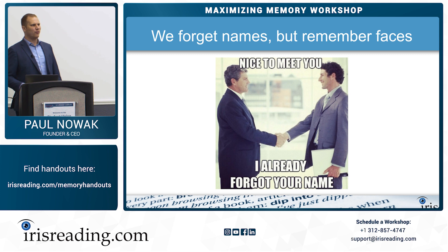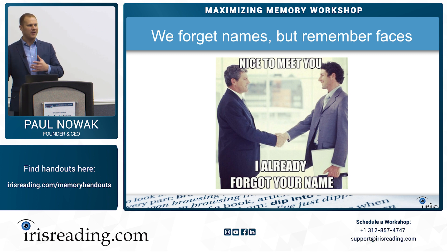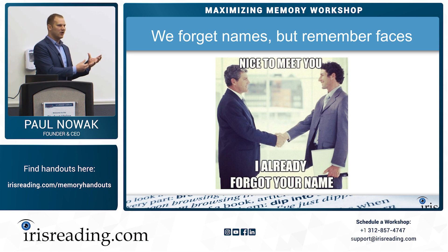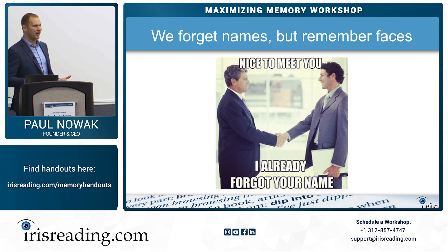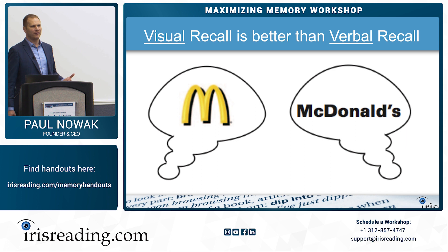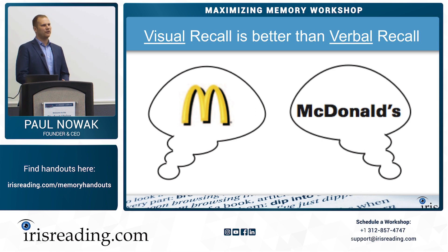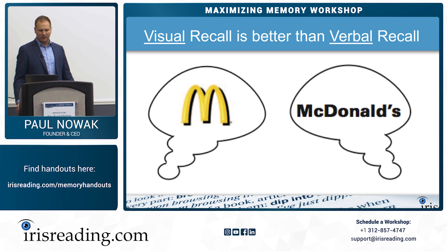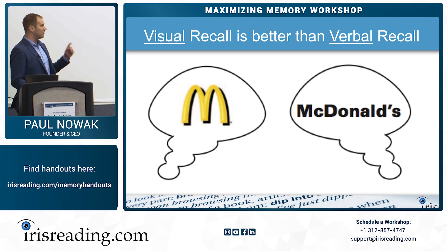So we need to find ways to convert verbal, numerical, or basically abstract information into visual form — that's part of what we're going to be talking about today. This is why companies have visual things associated with their brand. McDonald's has their golden arches, and there are probably a number of other visuals you associate with McDonald's rather than just the word. Your visual recall is much better than your verbal recall.